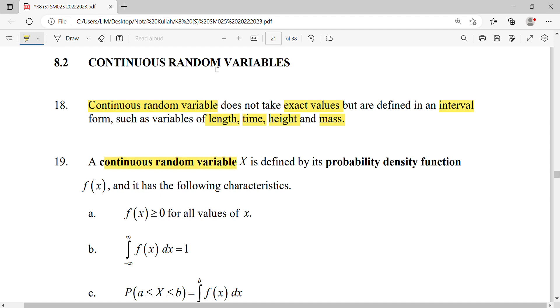A continuous random variable has a probability density function, denoted as f(x), with the following characteristics. First, the function is always positive, greater than zero for all values of x.